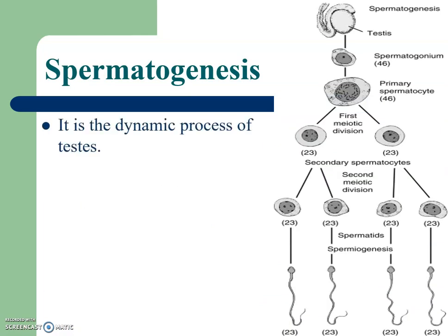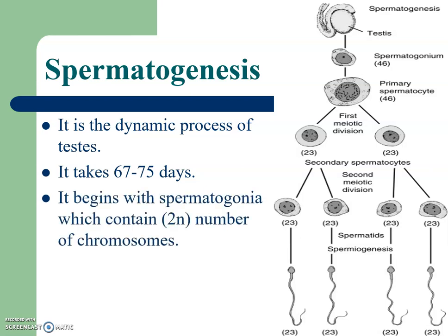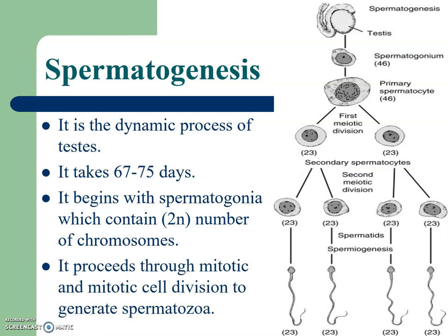Spermatogenesis is a dynamic process of the testes. It takes 67 to 75 days to produce spermatozoa. It begins with spermatogonia, which contain a 2N number of chromosomes in the first mitotic division. The entire process of spermatogenesis is divided into two divisions: first mitotic division and second meiotic division. In the first mitotic division there are 2N chromosomes, which are further divided in the second meiotic division to produce spermatozoa. The process proceeds through mitotic and meiotic cell division to generate spermatozoa.